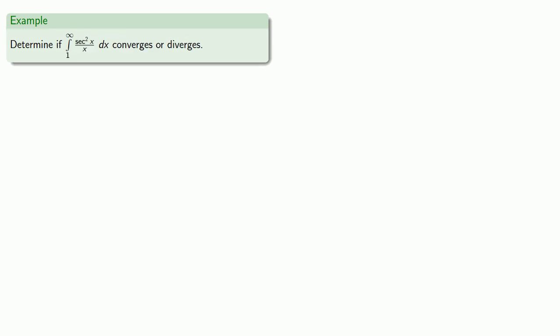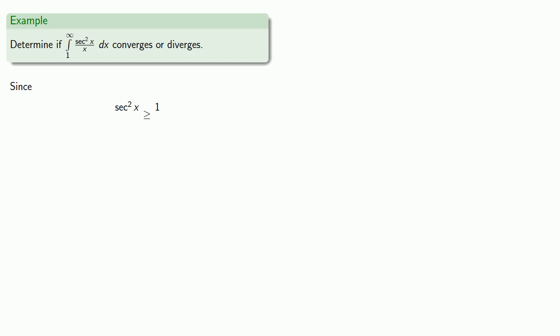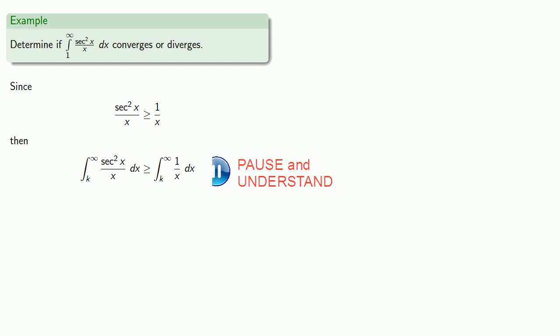As another example, let's consider the integral from 1 to infinity of sec²(x)/x. Again, we need a suitable comparison function, and here the problem is the secant function. Since secant is 1 over cosine, secant squared is 1 over cosine squared, and so secant squared is always greater than or equal to 1. So sec²(x)/x is always greater than or equal to 1/x, meaning the integral from k to infinity of sec²(x)/x is greater than or equal to the integral from k to infinity of 1/x. But the integral from k to infinity of 1/x diverges, and so does our integral.